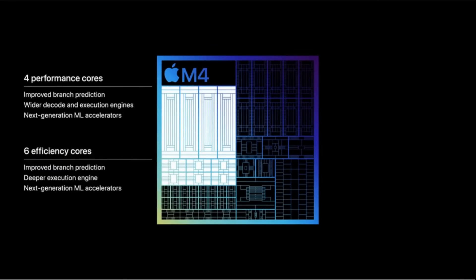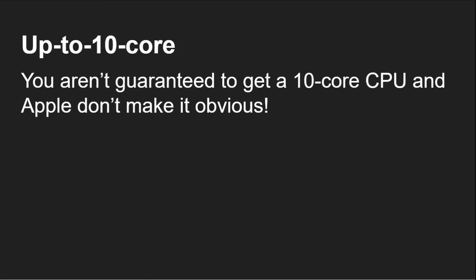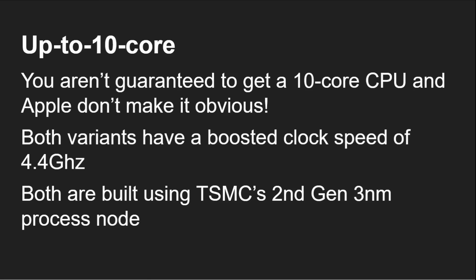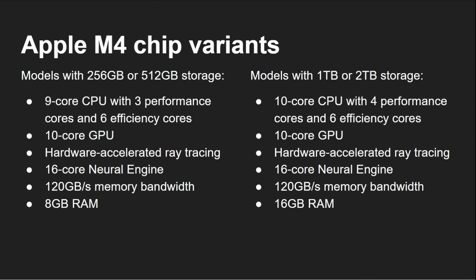Apple presented the new chip with four performance cores and improved branch prediction, plus six efficiency cores giving 10 in total. However, we have to notice the 'up to 10 core' wording — you aren't guaranteed to get a 10-core CPU, and Apple doesn't make it obvious. In fact, I know somebody who bought the new iPad online and when they got it with a 9-core one, they were pretty disappointed and are actually going to return it and order the next one up.